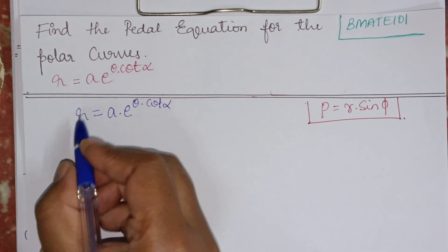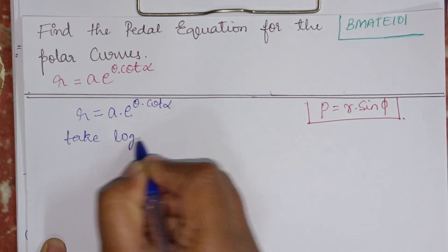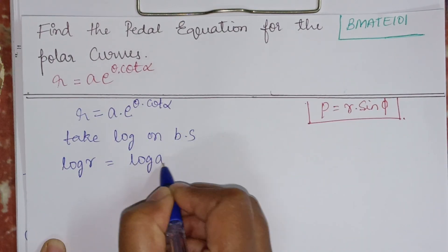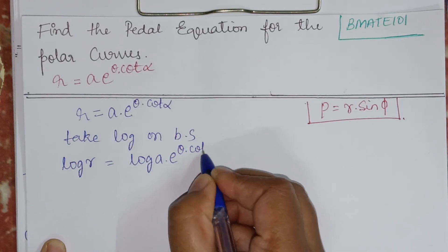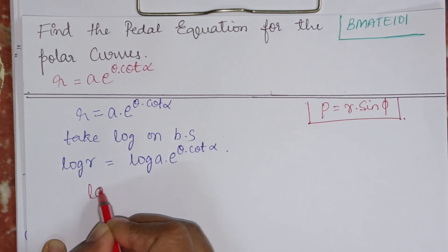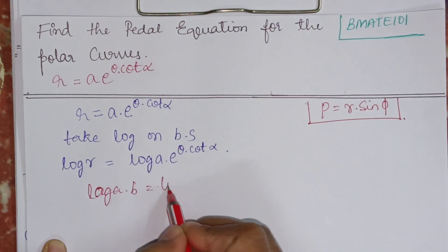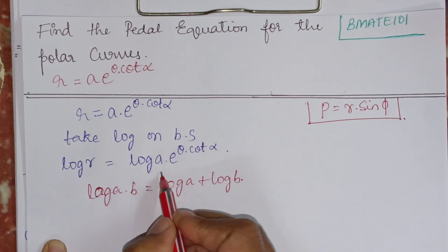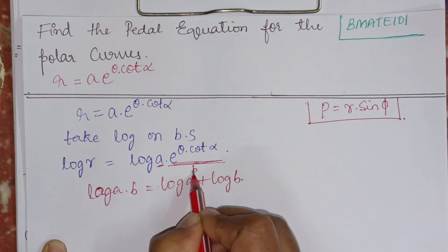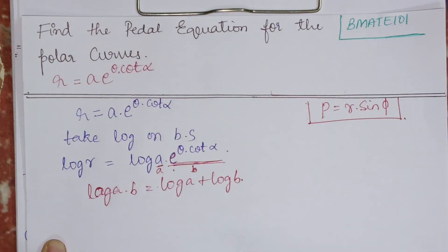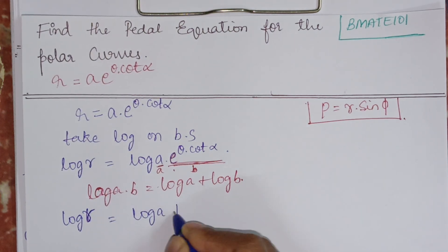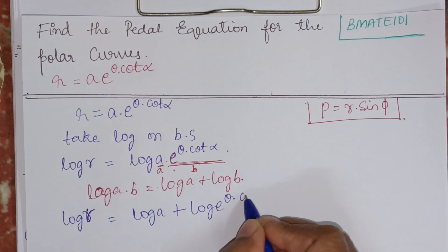So it is the same procedure. We will take log on both sides. That will become log R equals log A into E to the power theta into cot alpha. From the previous videos, if you have watched, you know that log(A·B) is nothing but log A plus log B. So this is log A and this entire thing is considered as B.